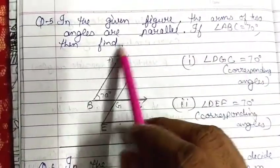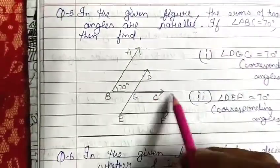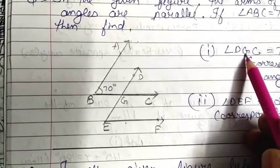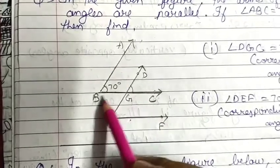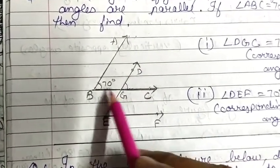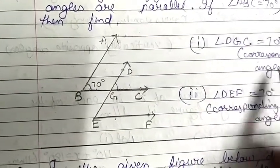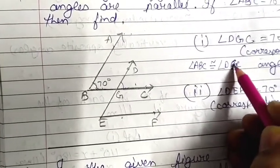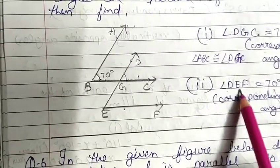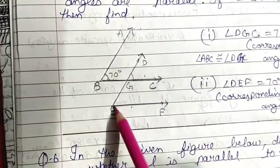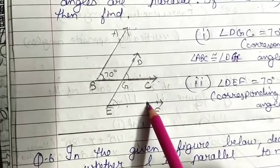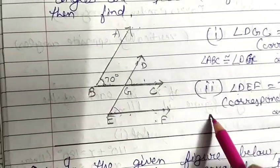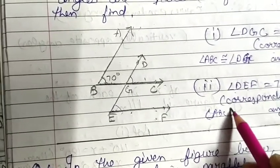In the given question, the arms of two angles are parallel. If angle ABC is 70 degrees, find the required angles. Angle DGC equals 70 degrees through corresponding angles — F-like structure — because ABC is congruent to DGC. For angle DEF: ABC corresponds to DEF. If ABC is 70 degrees, then DEF is also 70 degrees. In bracket: angle ABC is congruent to DEF, corresponding angle.